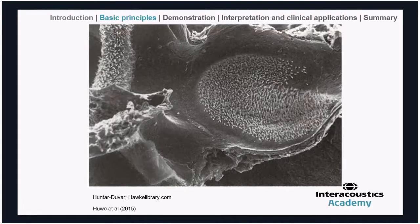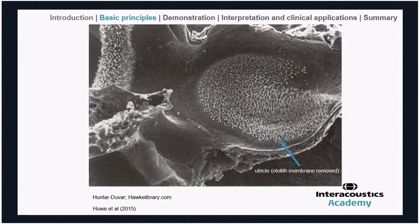This is a scanning electron micrograph from the Hawk Library — a website I strongly recommend — showing the utricle in a mammal, the chinchilla. The otolithic membrane has been removed so we're peering down onto the sensory epithelia, a sheet of hair cells. The stereocilia from those hair cells protrude upwards and would normally protrude into the otolithic membrane.